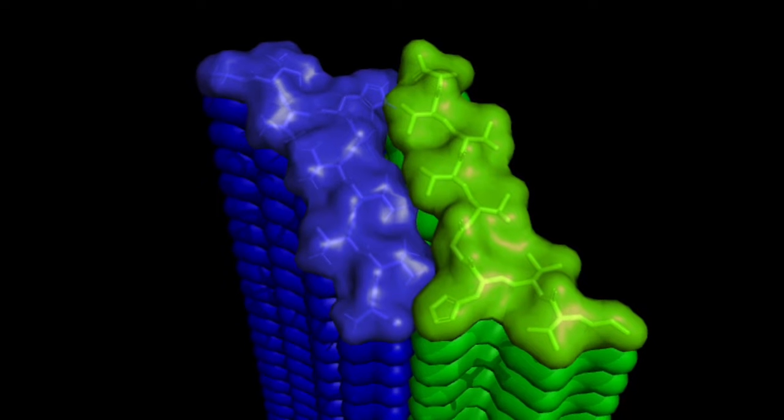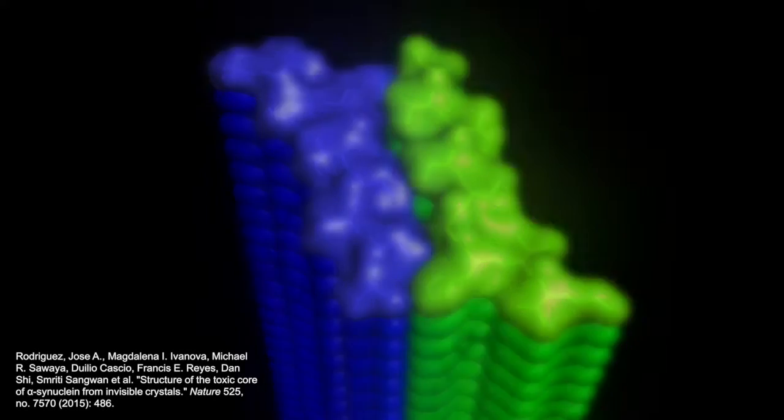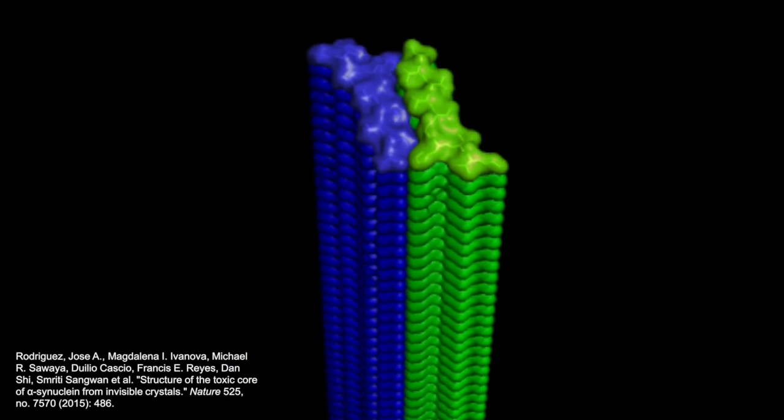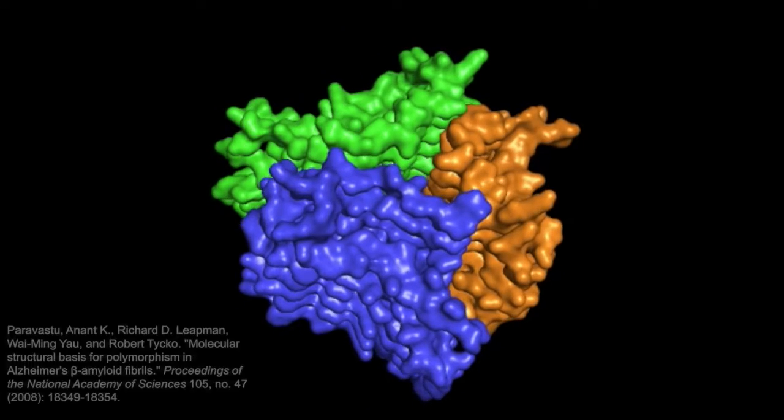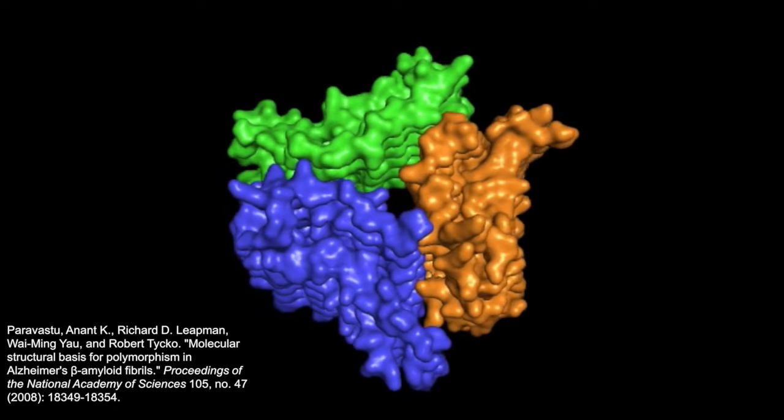Protein fibrils are highly structured, filamentous aggregates of individual protein monomers held together by attractive intermolecular interactions. Amyloid fibrils in particular are a common type of fibril characterized by a cross-beta sheet structure.